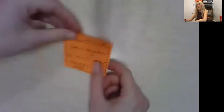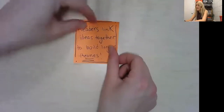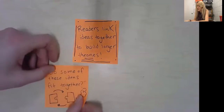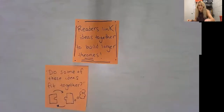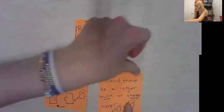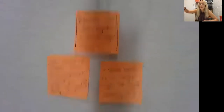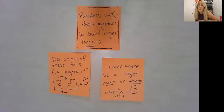Today I want to teach you that readers will link ideas together to build larger theories. They do this by asking themselves a few questions. They look over their ideas, their jots, and they ask: do some of these ideas fit together? Could there be a larger truth or theme here? And then they use this to build a larger theory or interpretation about the story. Let me quickly show you how I do this.